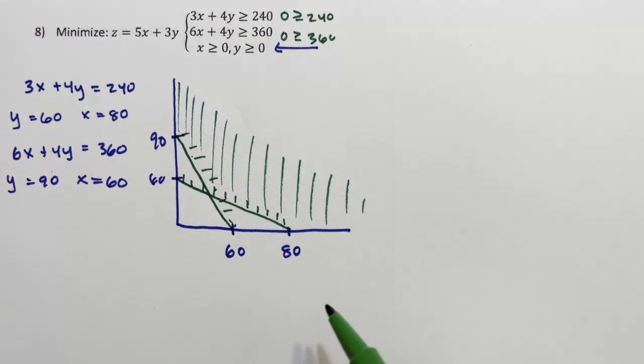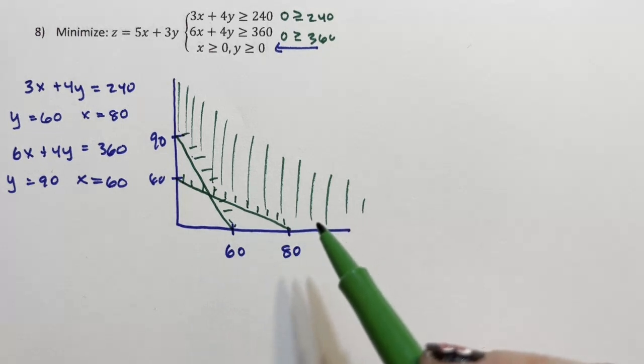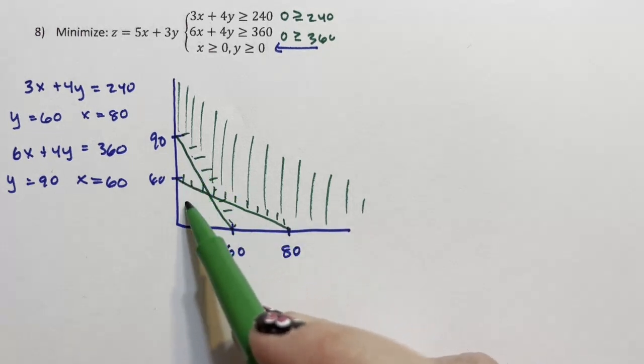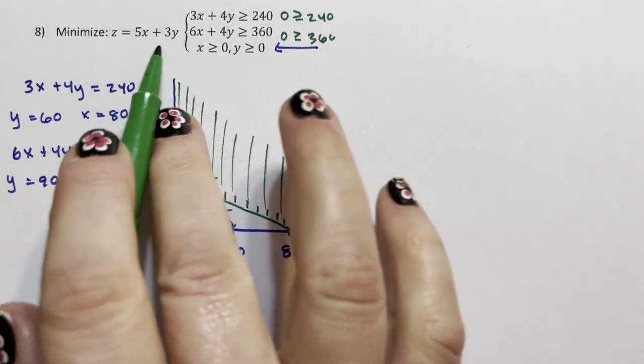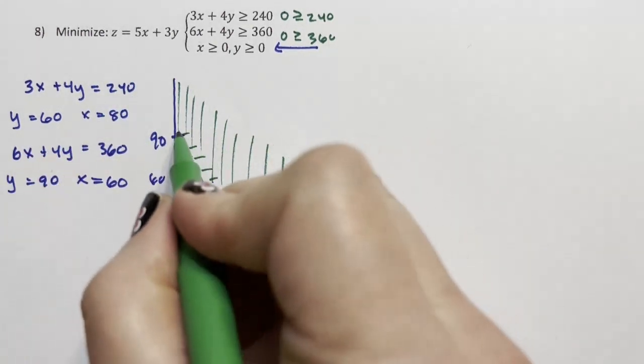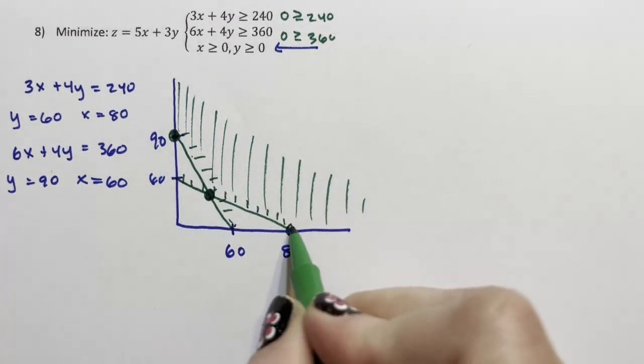Now, the thing about linear programming, the minimum or maximum of this 5x plus 3y is going to happen either here,